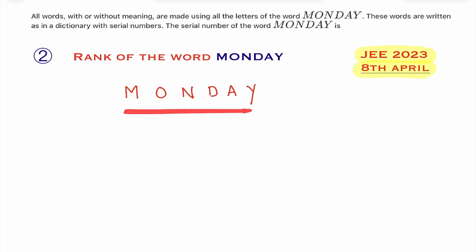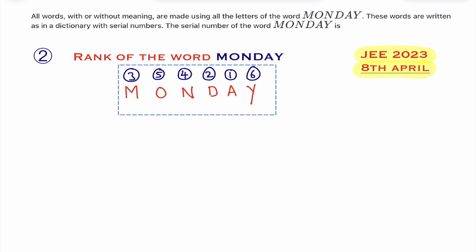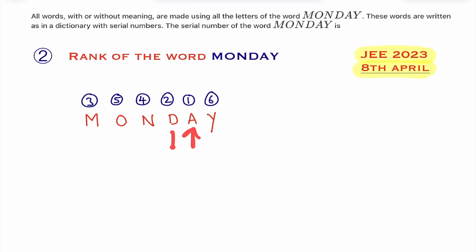Observe the word MONDAY. As per alphabetical order, we give numbers to these letters. A is 1. Then B, C, D — so D is number 2. Then A, B, C, D, E, F, G, H, I, J, K, L, M — so M is number 3. N is number 4. M, N, O — so O is 5. And obviously Y is 6. Give numbers like this to all the alphabets.